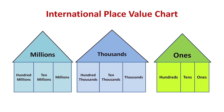For nine-digit numbers we have three houses: the ones house, thousands house, and millions house. We call these houses 'periods' in maths. In each house only three members can live, and we call them places.